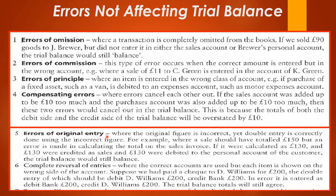Errors of original entry — this is where the original figure is incorrect yet double entry is correctly done using the incorrect figure. For example, where a sale should have totalled $150 but an error is made in calculating the total on the sales invoice, if it were calculated as $120 and $120 were credited to the personal account of the customer, the trial balance would still balance.